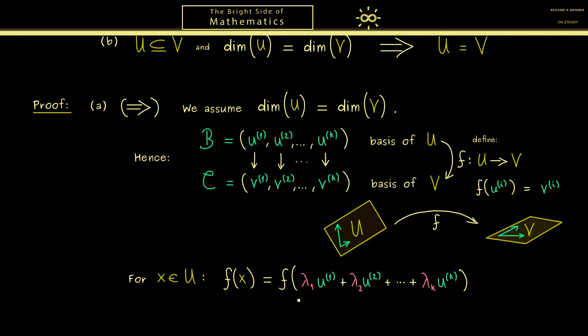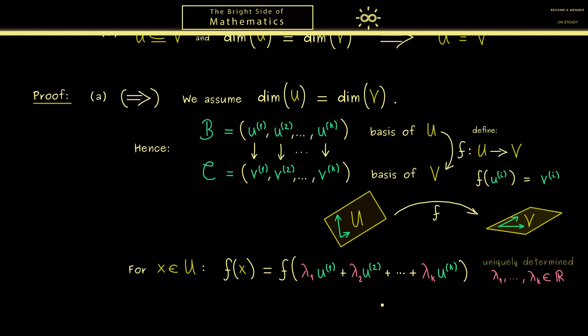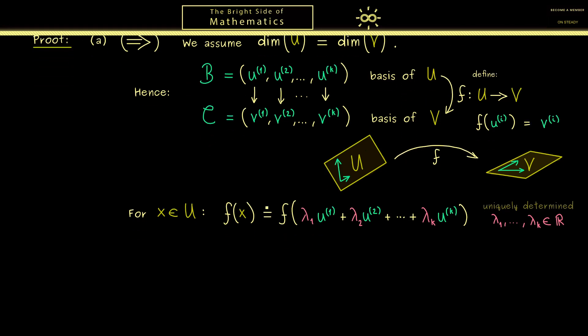Ok and then we know X can be written as a linear combination out of the vectors from the basis. So what we find are fixed coordinates, coefficients, lambda 1, lambda 2 and so on. Indeed we know these numbers here are uniquely given. Ok and now for the calculation here we know that we want F to be linear. Therefore the linearity is exactly what we can use now.